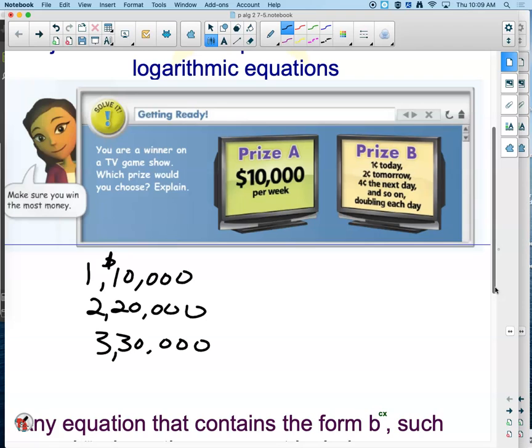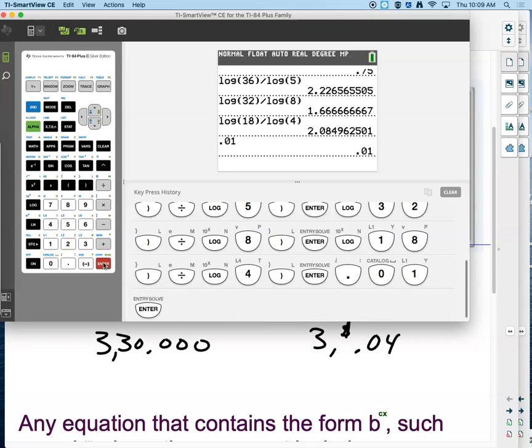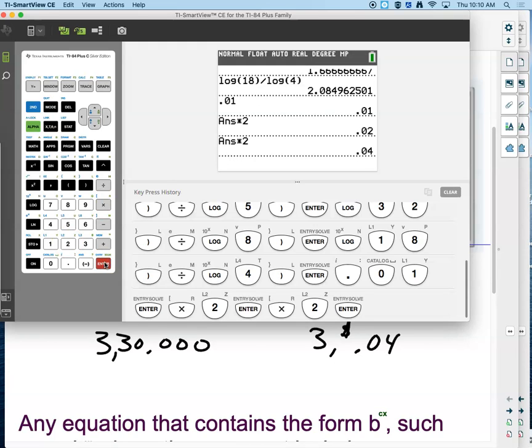Prize B. Oh, this is a rip. A penny today? Two cents tomorrow? Oh, four cents the next day. So what are they doing each day? And most people would say no way, I'm not going to take that. Well, let's see. If we start off with a penny and we double it, there's day two. Double it again, day three. Four, five, six, seven, eight, nine, ten, eleven, twelve, thirteen, fourteen, fifteen, sixteen, seventeen, eighteen, nineteen, twenty, twenty-one, twenty-two. See what's happening?